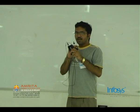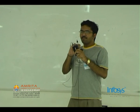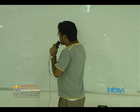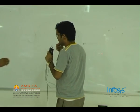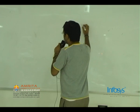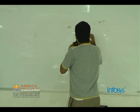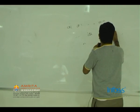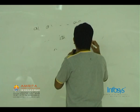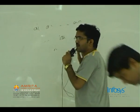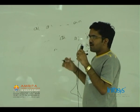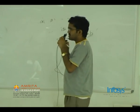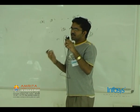For this problem, for each number we will find a corresponding number such that their XOR is maximum. We have numbers a1, a2, ..., an. For each aᵢ we find some bᵢ for which aᵢ XOR bᵢ is maximum. After doing this for each number, among all pairs we choose the maximum XOR value.